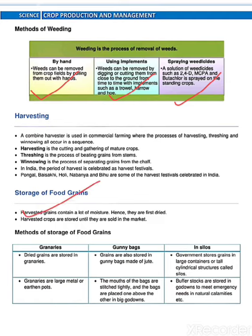Then after storage of food grains. Here there are some methods of storage of food grains. First one is granaries — dried grains are stored in granaries. Then after gunny bags — jute bags are used. And then after silos — governments store grains in large containers or tall cylindrical structures called silos.